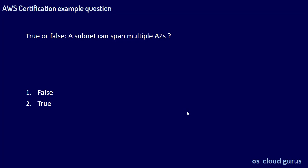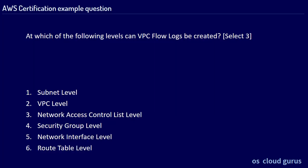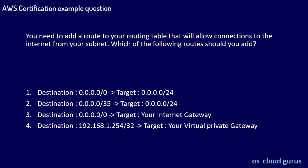True or false: a subnet can span multiple availability zones. Of course it cannot — that's one of the simpler questions. Another question: the answer is only VPC 1 because transitive peering is not allowed. VPC B can only communicate directly with VPC A. In which of the following levels can VPC flow logs be created? There are three correct answers: the VPC level, the subnet level, and the network interface level. The final question here has the correct answer of number three — a route from 0.0.0.0/0 to your internet gateway.